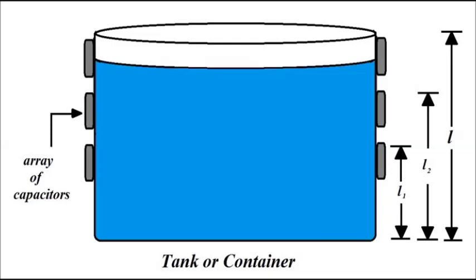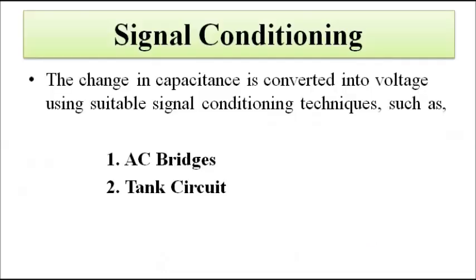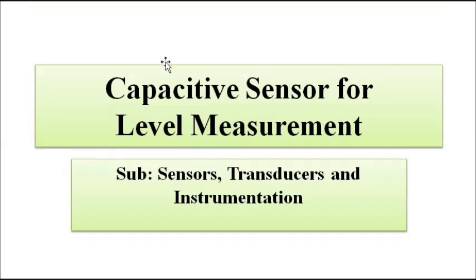Like any capacitive transducer, the change in capacitance can be converted into a suitable voltage or current signal using signal conditioning arrangements — generally AC bridges involving capacitance in one of the arms, or a tank circuit (LC circuit). The AC bridges technique is most commonly used. The signal is then passed through suitable amplification stages to give an output as an amplified voltage or current signal.